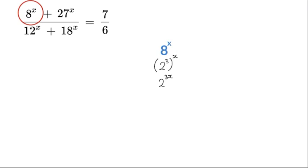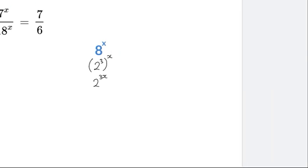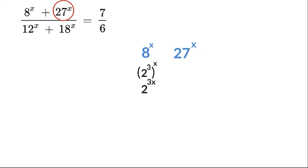Using the power rule we can write that as 2^(3x). Now let's move on to 27, which we can rewrite as (3³)^x, and then using the power rule we write it as 3^(3x).